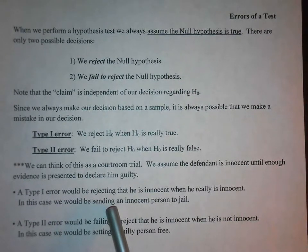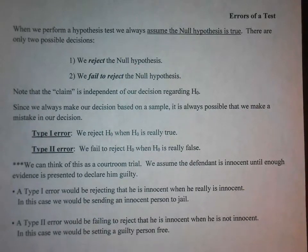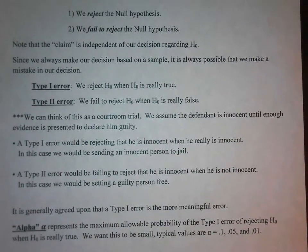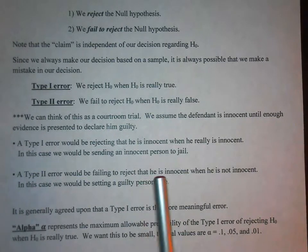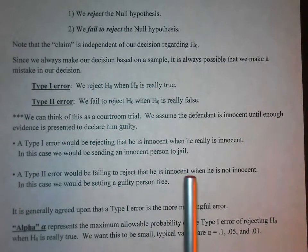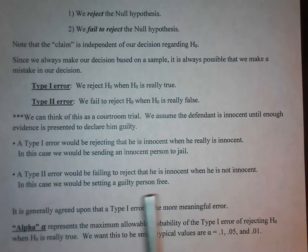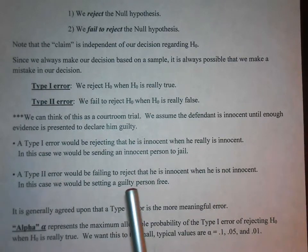Think about how bad that is — that's a bad error to make. A type 2 error would be failing to reject that he is innocent when he really is not innocent. So that would be a case of setting a guilty person free.